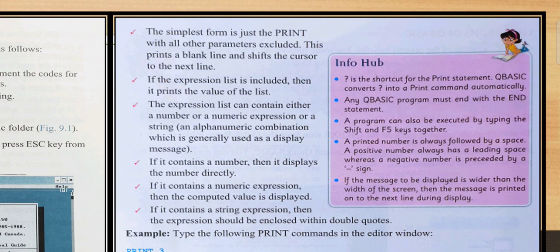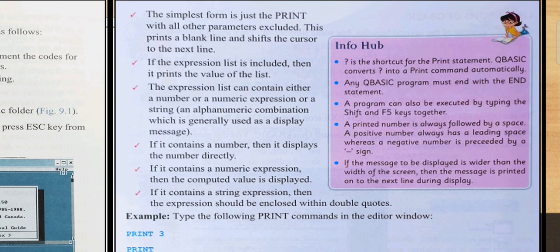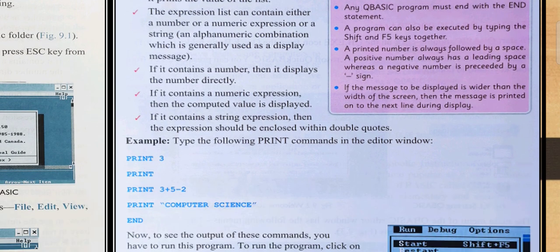The simplest form is just PRINT with all other parameters excluded. This prints a blank line and shifts the cursor to the next line. If the expression list is included, then it prints the value of the list. The expression list can contain either a number or a numeric expression or a string alphanumeric combination which is generally used to display a message. If it contains a number, then it displays the number directly. If it contains a numeric expression, then the computed value will be displayed. If it contains a string expression, then the expression should be enclosed within double quotes.